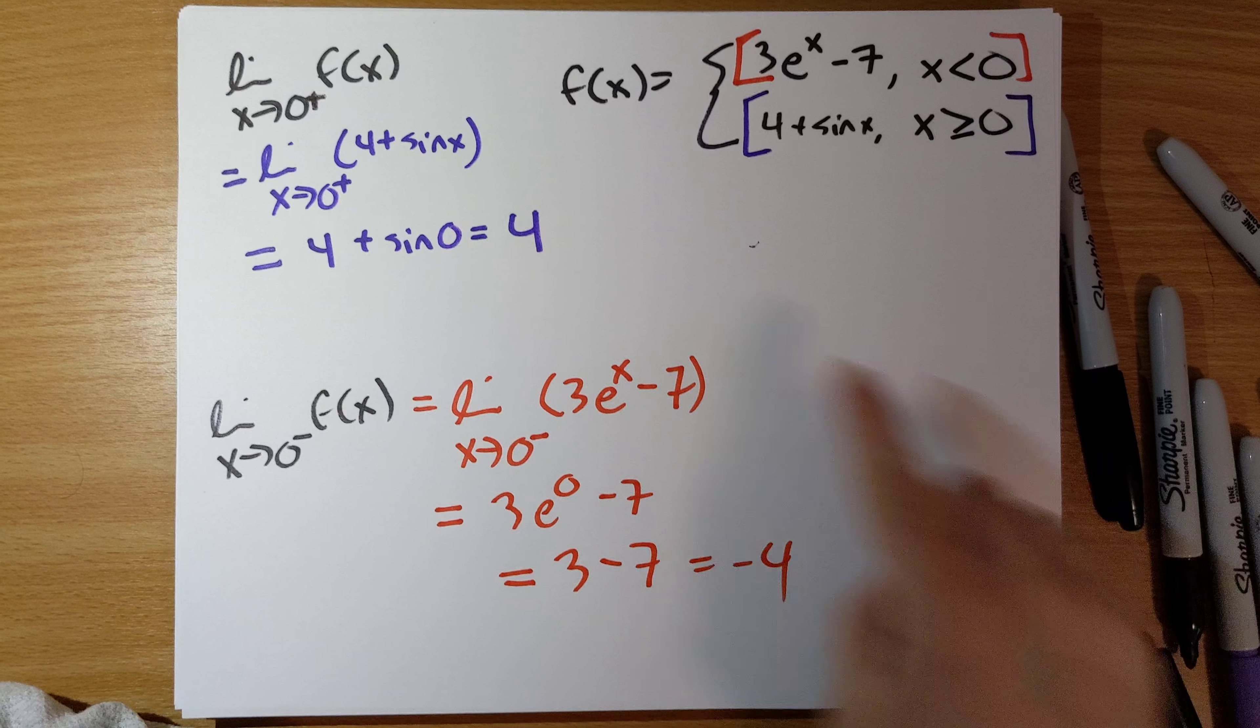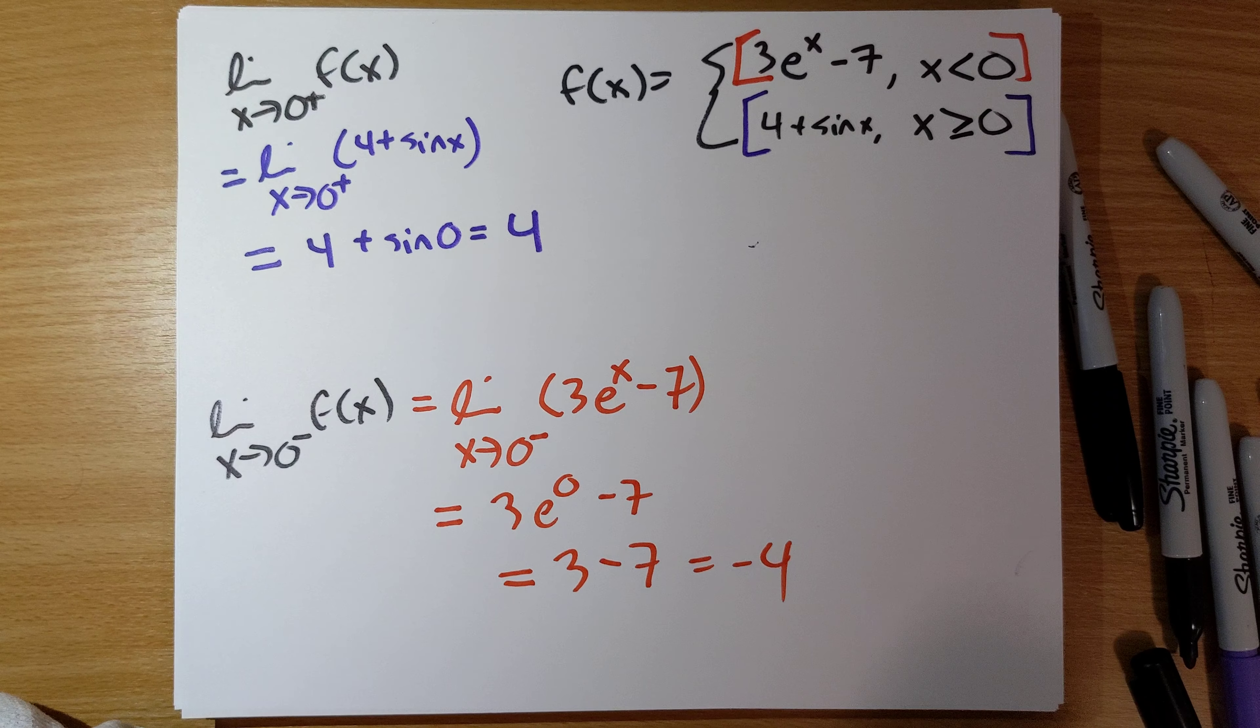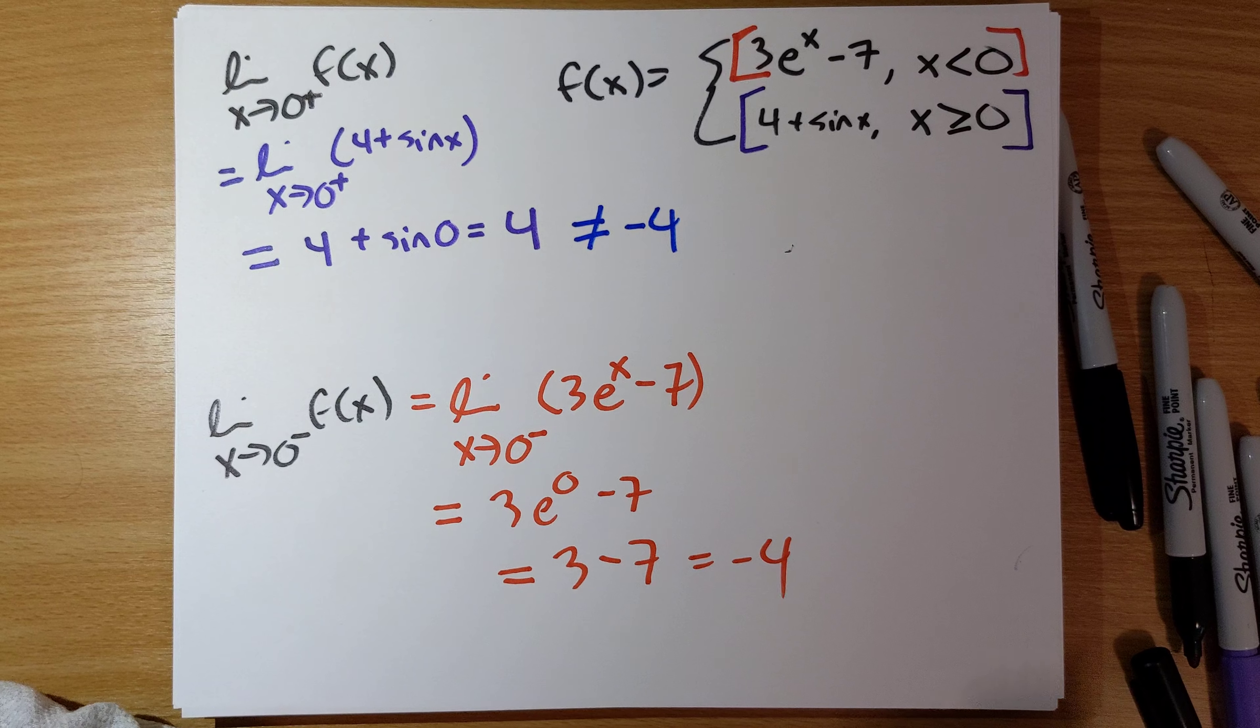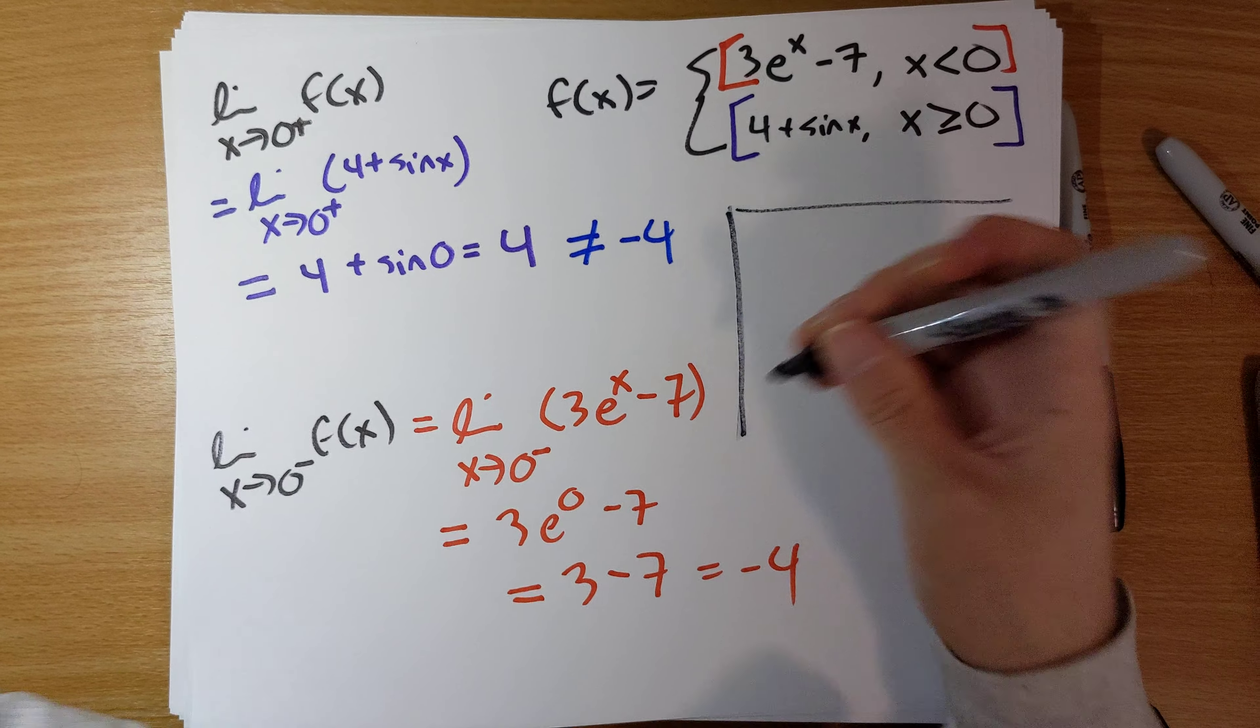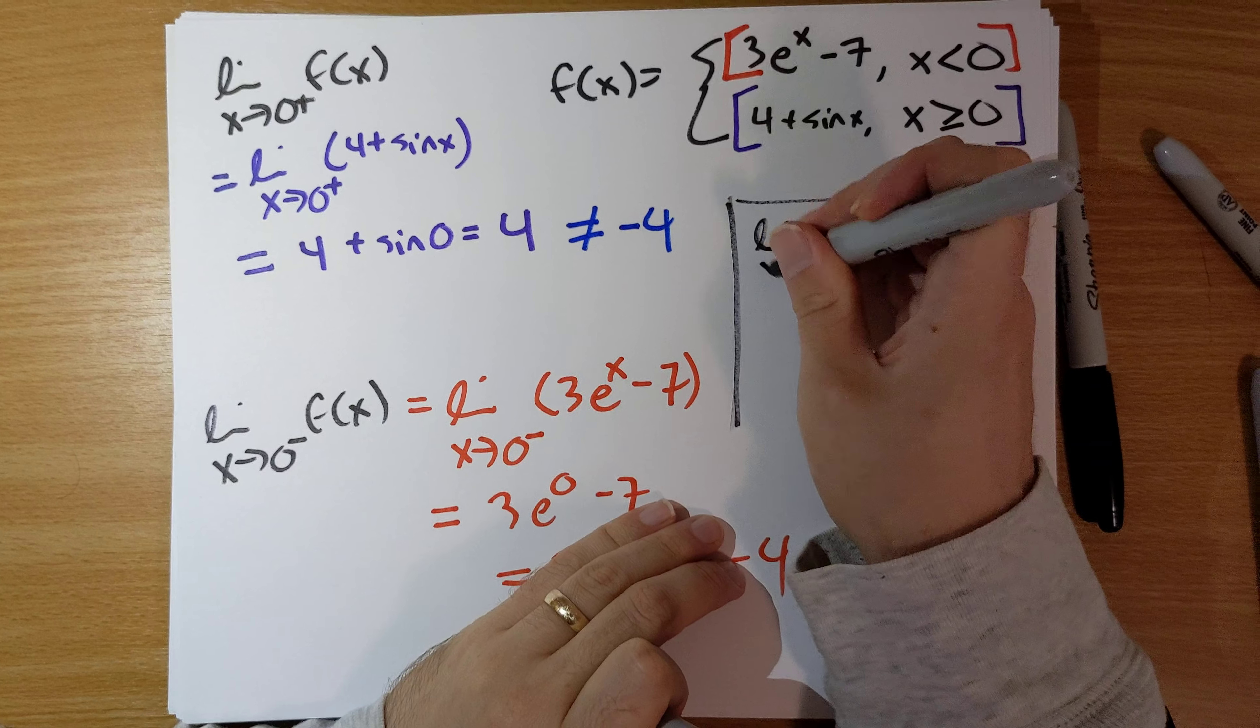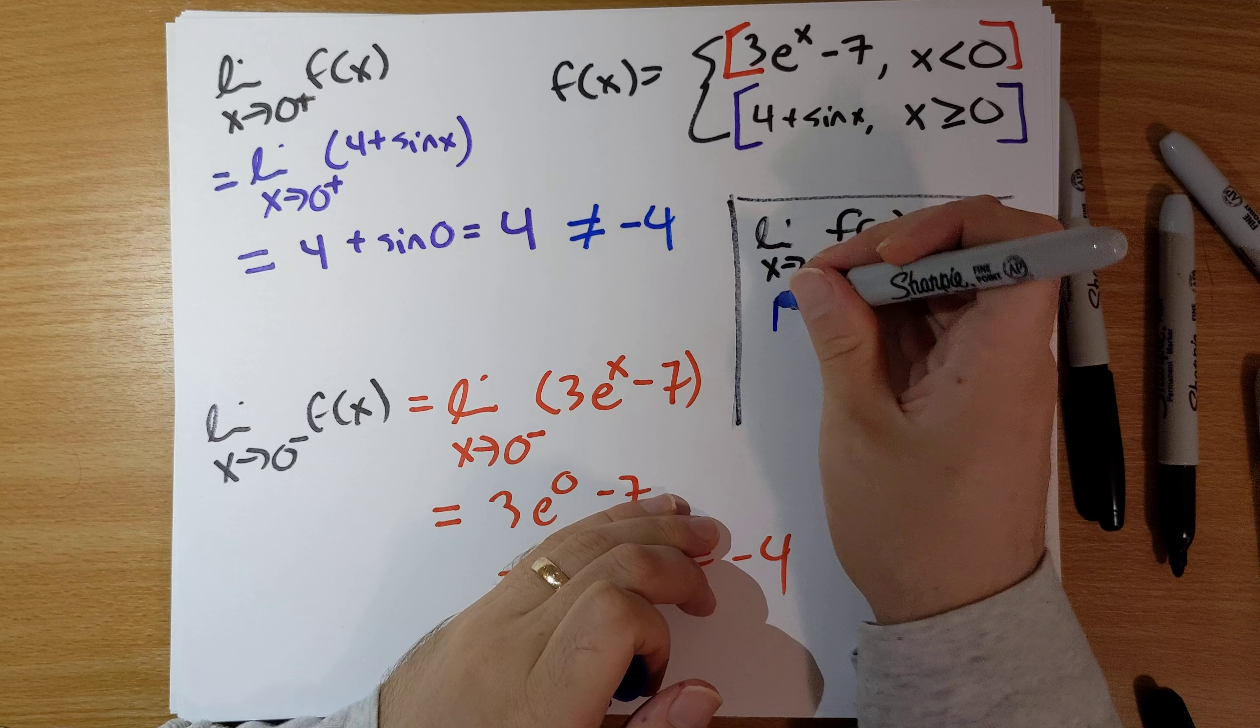So what do we see here? One answer is 4, one answer is negative 4. These are not equal to each other, so the overall limit, the limit as x goes to 0 of f of x does not exist.